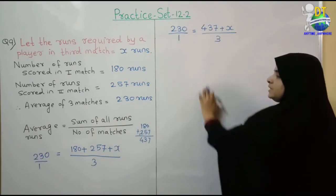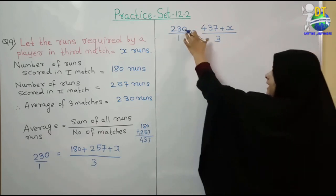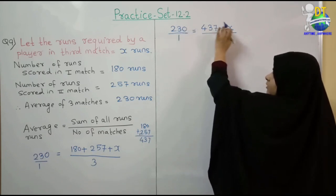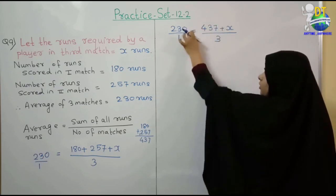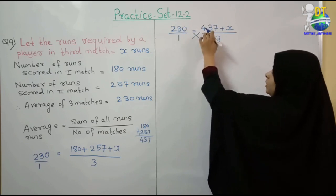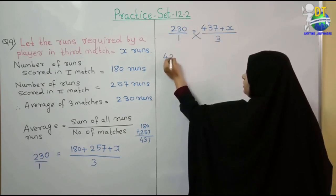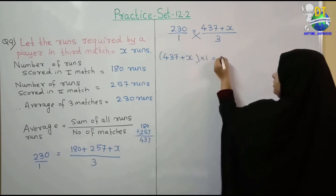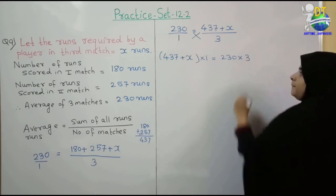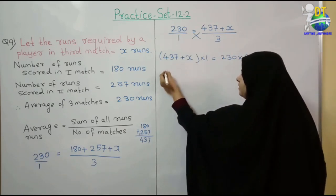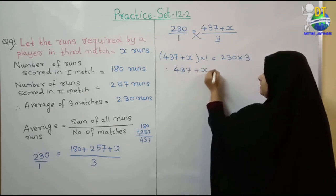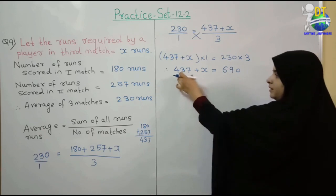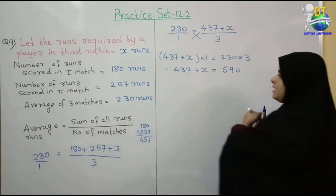See student, a upon b is equal to c upon d — cross multiplication. So student, पहले इन दोनों का multiply, फिर इन दोनों का. क्योंकि यहाँ पर 1 है and x यहाँ पर है — आपको x इधर चाहिए. तो: 437 plus x, multiply by 1 — then 230 multiply by 3. 1 से multiply करें therefore 437 plus x is equal to 690.